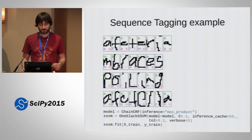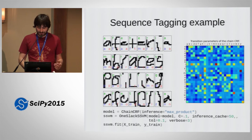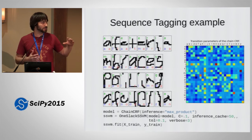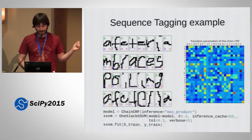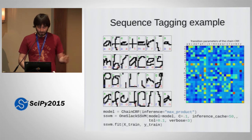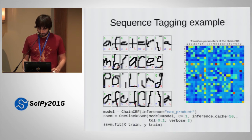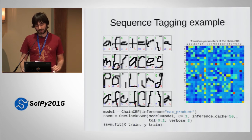You can introspect the parameters and see what happens. This is the pairwise compatibility between two neighboring letters that were learned. You can see that an i is often followed by an n, and an l is often followed by a y, at least for the English words in this data set. So for sequence prediction, this is pretty straightforward to use.